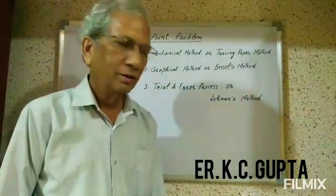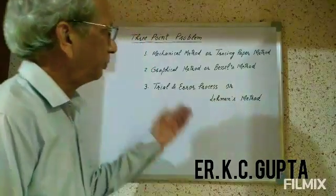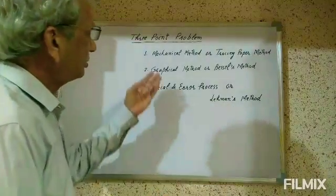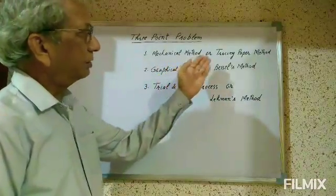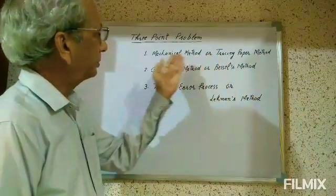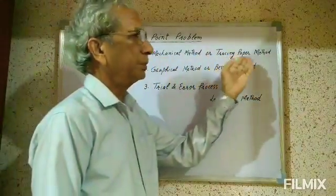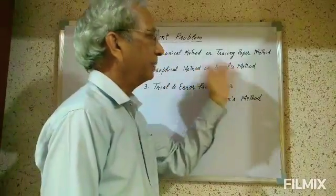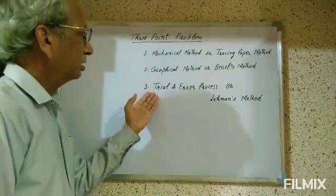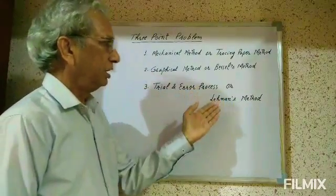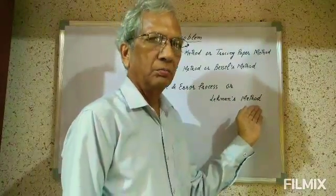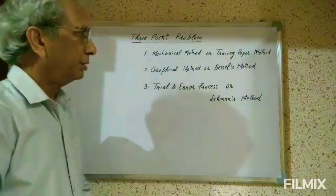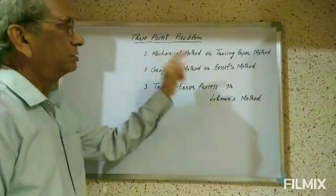Good morning students. Today we will discuss the three-point problem. In the three-point problem there are three methods. The first is the mechanical method — since tracing paper is used, it is also called the tracing paper method. The second method is the graphical method, also known as Bessel's method. The third method is the trial and error process, also called Lehmann's method. Today we will discuss the mechanical method, that is, the tracing paper method.